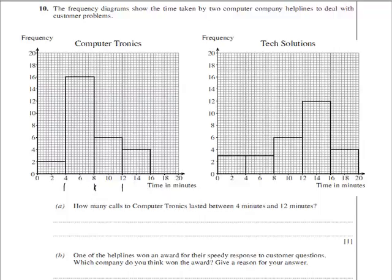As you can see it's just a standard bar chart so the frequency of this bar is 16 and of this bar is 6, so the total is 22.